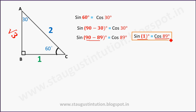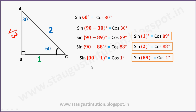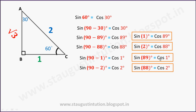Using this complementary angle relationship: sin 1° = cos 89°. Similarly, sin(90° − 88°) = cos 1°, which means 90° − 88° = 2°, so sin 2° = cos 88°. And sin(90° − 88°) = cos 2°, meaning sin 2° equals cos 2° in this context.